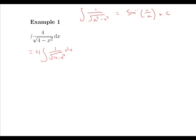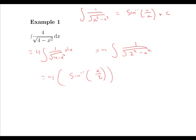So what is our value of a here? Our value of a is 2, since 2 squared gives us 4. So we can rewrite the integral in the form 4 times the integral of 1 over the root of 2 squared minus x squared. Integrating this gives us 4 multiplied by sine inverse x over 2 plus c, so the answer is 4 sine inverse x over 2 plus c.